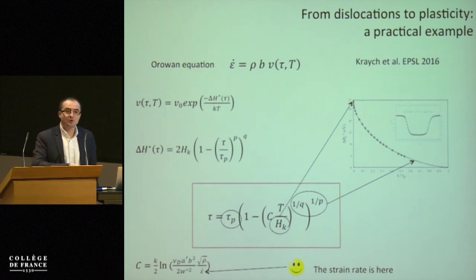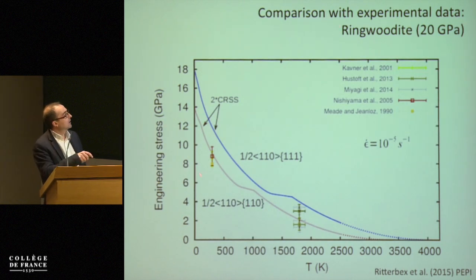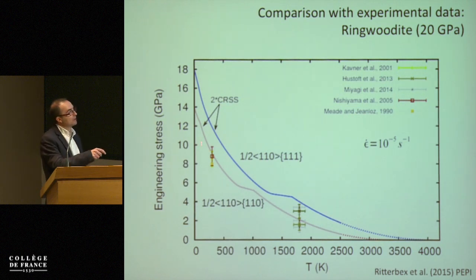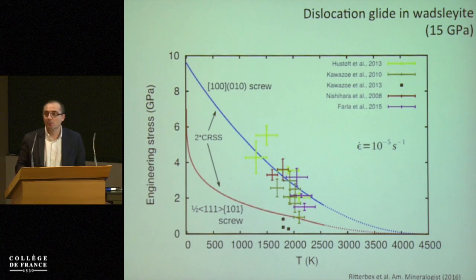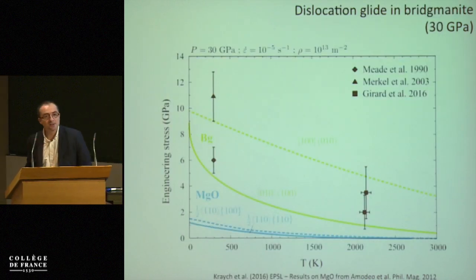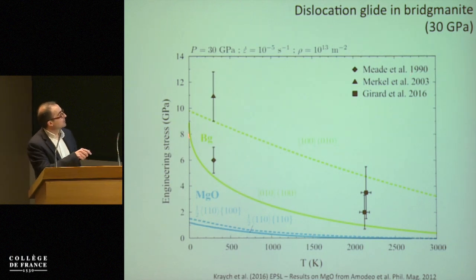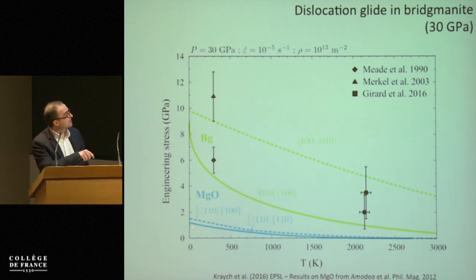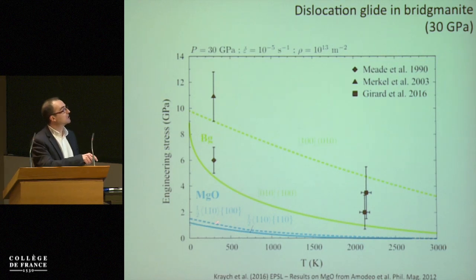Using this expression and comparing with experimental data: for ringwoodite, the blue and red lines from our calculation amazingly match the decrease of flow stress as a function of temperature, going through the experimental data for the easiest slip system. The same applies to wadsleyite — not only the right order of magnitude but the right decrease. For bridgemanite we have few experimental flow stress points and the result of our calculation in green for two slip systems. I also plot the result for magnesium oxide (periclase) to highlight the contrast in strength between periclase and bridgemanite.